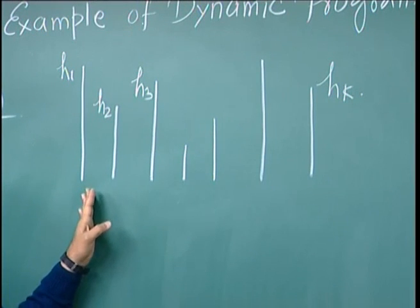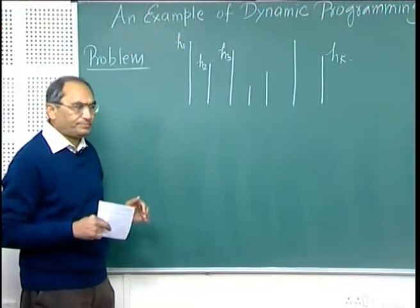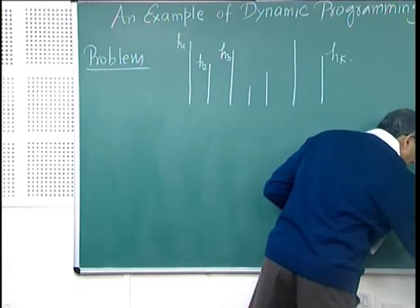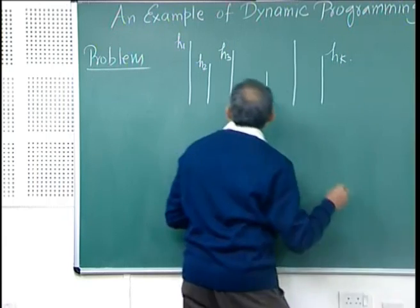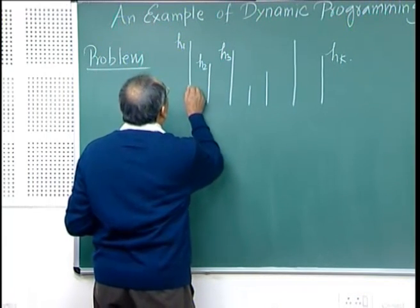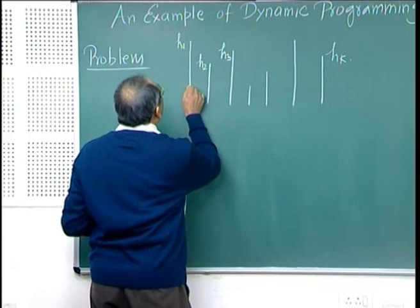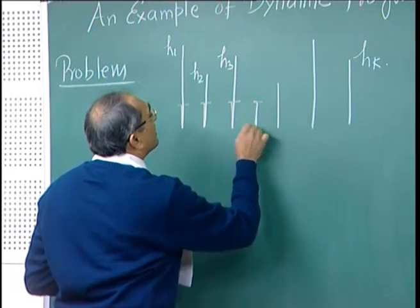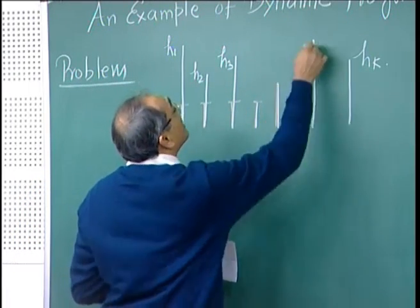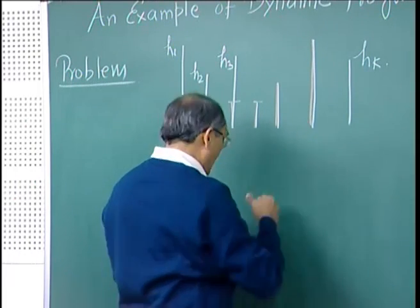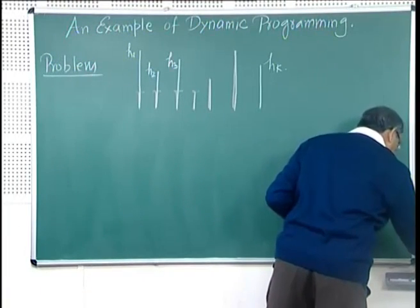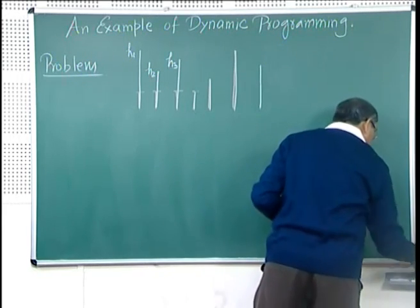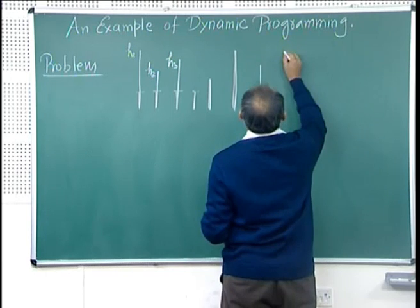But we want to do this in such a way that we cut the least amount of wood. For example, in this case a possible solution could be that we cut here, we keep this much, we keep this as it is, then we keep this whole thing, we may keep this whole thing. Let me make it a slightly longer sequence.